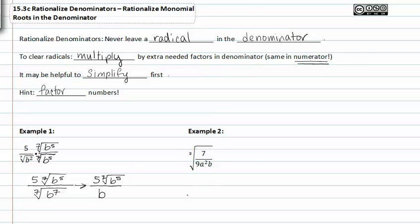In example two we have the third root of seven over nine a squared b. Let's go ahead and break this into two separate radicals: the cubed root of seven over the cubed root of nine a squared b. Nine is the perfect square of three, so I'll write that as three to the second, a to the second, b. Now I need to figure out what will give all these different factors in the denominator an exponent of three, so they can all be simplified and come out of the radical.